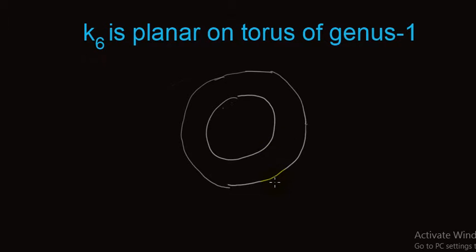Welcome students. In this lecture we show that K6 is planar on torus of genus 1. K6 is a complete graph of order 6. In the previous lecture we proved that K5 is planar on torus of genus 1. If you want to watch that lecture you can find its link in the description.